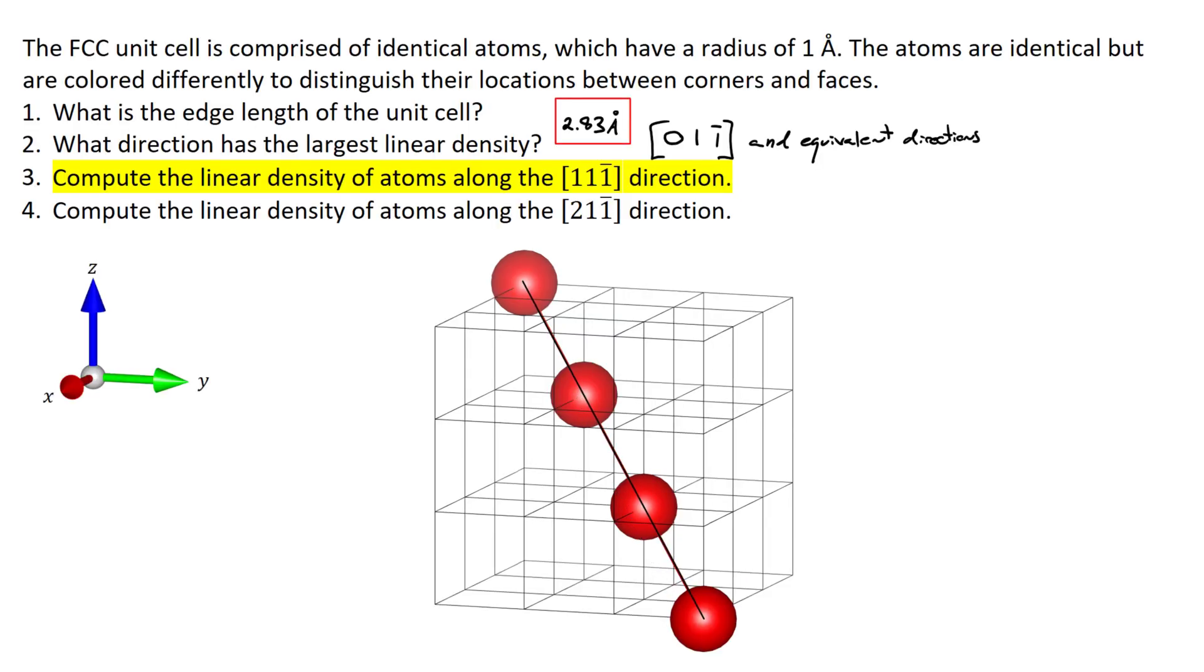If I use my measuring device again, you might think that there are four atoms along the length of that line. But remember, the atoms at the end are shared between adjacent lines. So what I find it useful to do is just move the line a little bit and then recognize that there's only three atoms along the length of that line.